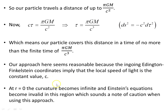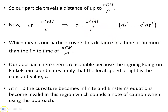A caution: at r = 0 the curvature becomes infinite and Einstein's equations become invalid in that region, so care is needed there. However, given that geodesics must continue past the event horizon down to the singularity, there is reasonable confidence that πGM/c² is the proper distance for the Schwarzschild radius — as opposed to the coordinate distance — and πGM/c³ is the proper time a particle of mass takes falling in.